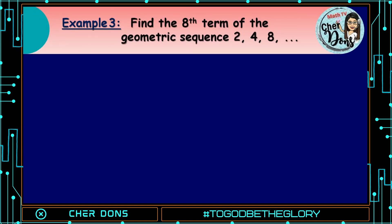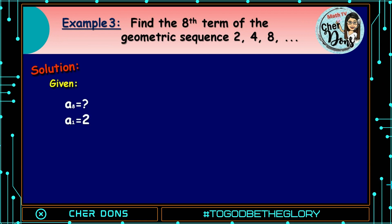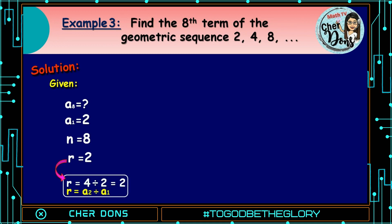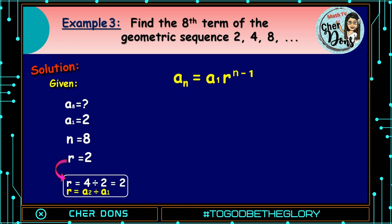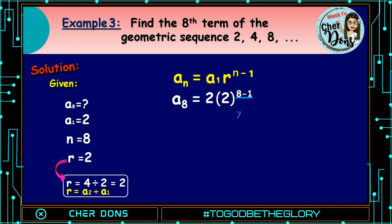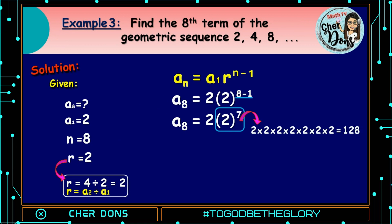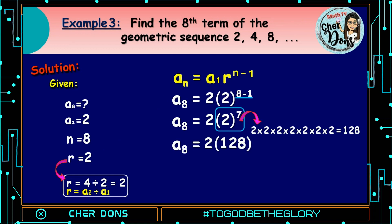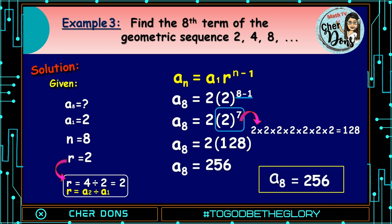Example number 3: Find the 8th term of the geometric sequence 2, 4, 8, and so on. Given: a sub 1 = 2, n = 8, r = 2 (since 4÷2=2). Applying the formula: a sub 8 = 2 × 2^(8−1) = 2 × 2^7. Since 2^7 = 128, a sub 8 = 2 × 128 = 256. Therefore the 8th term is 256.